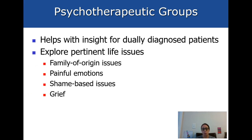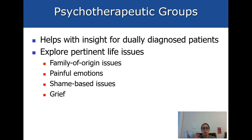Psychotherapeutic groups are processing groups used to help gain insight. For example, a group on grief — grief as it relates to losing the substance you've had a close relationship with for a long time, or losing people in your life either because they no longer want to be around you due to substance use or because they have passed away. These groups also process painful emotions and family of origin issues. Unlike educational groups where the facilitator does most of the talking, in processing groups you present a topic and then help members explore and process it.